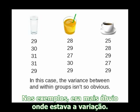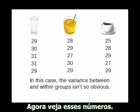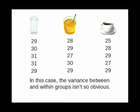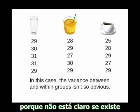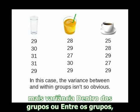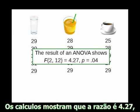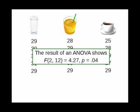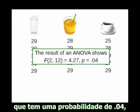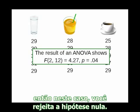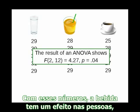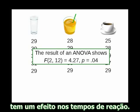In the examples, it was obvious where the variance was. Now look at these numbers — you probably can't tell if there's a significant effect, because it's not clear whether there's more variance within groups or between groups, or how much. The calculations show that the ratio is 4.27, which has a probability of .04. So in this case, you can reject the null hypothesis. With these numbers, the drink you give the people does have an effect on their reaction time.